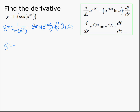Simplifying, we have a negative. Sine over cosine, since the arguments are the same, is tan of e to the 2x. We put the constants out front: 2e to the 2x. So the final answer is negative 2, e to the 2x, tan of e to the 2x.